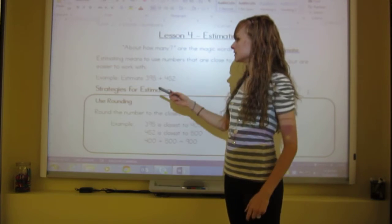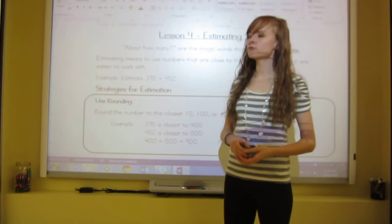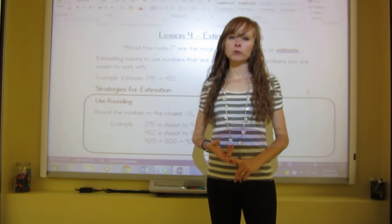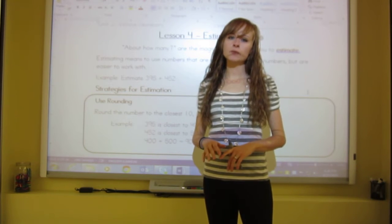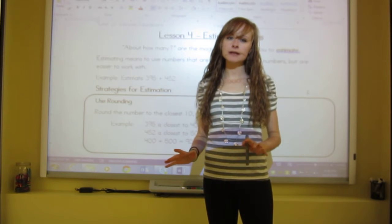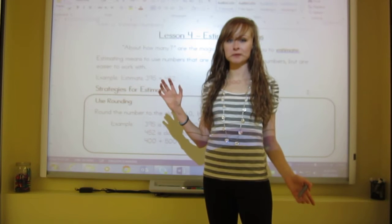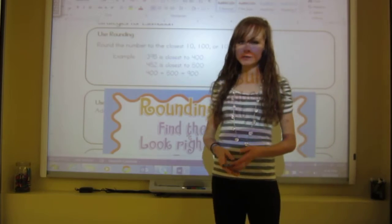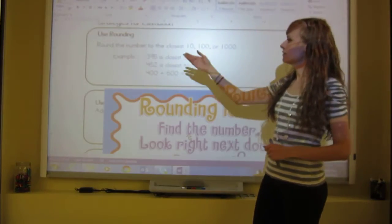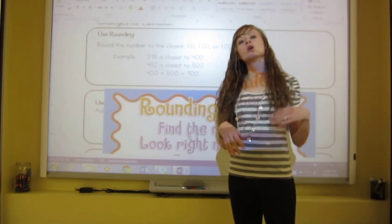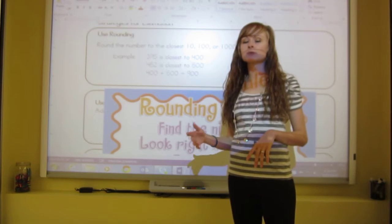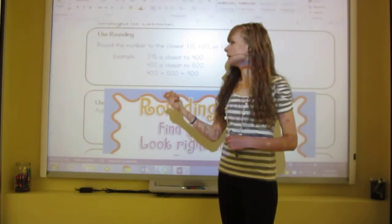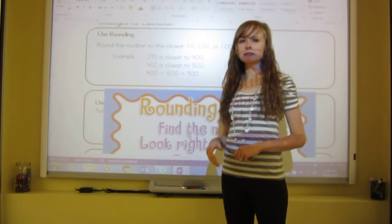Our example for estimating is 395 plus 452. There are three different strategies for estimation. I'll show you the one we will most commonly use first, and then two other ways. If those other ones don't make sense, that's okay — as long as the first one makes sense, we're good. The first way is to use rounding. You round the number to the closest tens, hundreds, thousands place, and so on. For example, 395 is closest to 400 when rounding to the nearest hundreds.